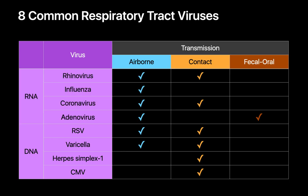While the modes of rhinovirus, coronavirus, RSV, and varicella transmission can be either airborne or via direct contact, adenovirus can be spread by either airborne or fecal-oral routes. Influenza is primarily spread by airborne transmission, while HSV type 1 and CMV are primarily spread by direct contact.